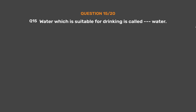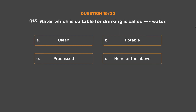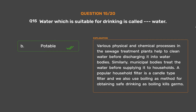Question number 15: Water which is suitable for drinking is called dash water. Option A: Clean. Option B: Potable. Option C: Processed. Option D: None of the above. The correct answer is Option B: Potable. Various physical and chemical processes in sewage treatment plants help to clean water before discharging it into water bodies. Municipal bodies treat the water before supplying it to households. A popular household filter is a candle type filter, and we also use boiling as a method for obtaining safe drinking water, as boiling kills germs.